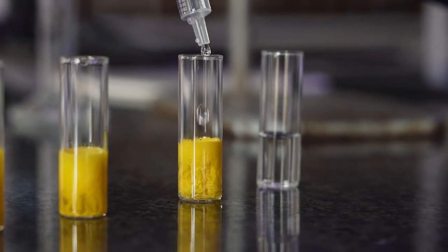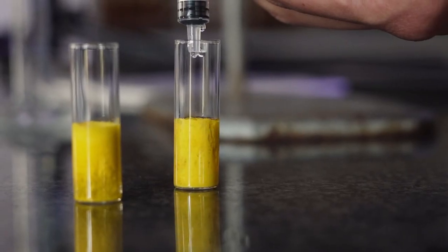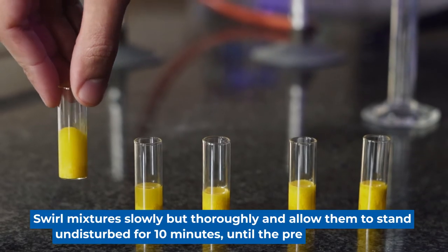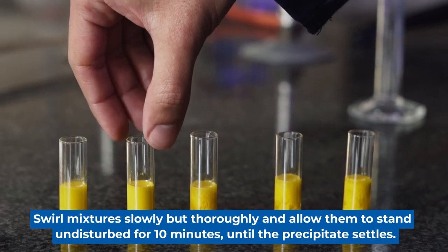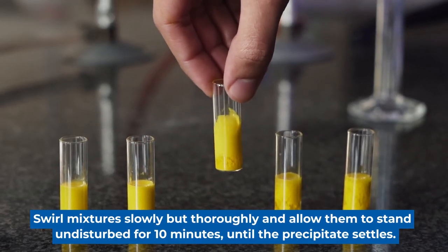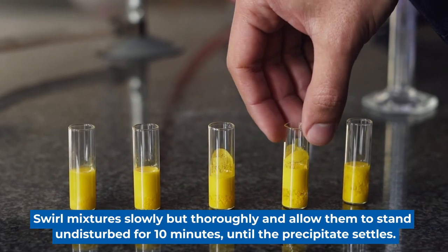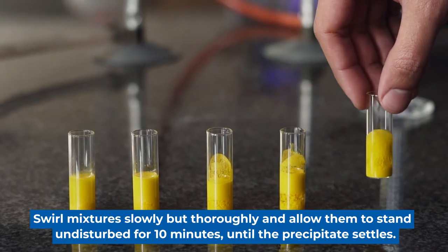Once all of the vials have been made up to three cubic centimeters, we need to swirl all of them to make sure that all of the lead nitrate, potassium, and iodide ions can react with one another.